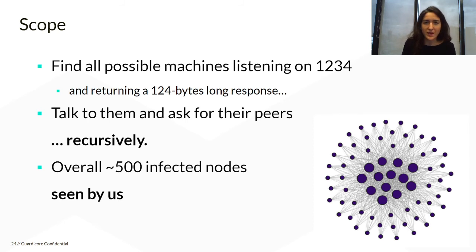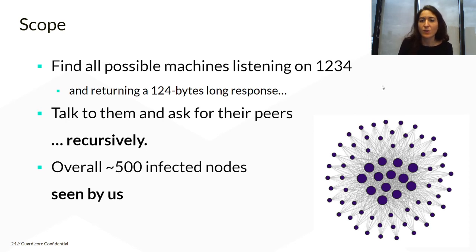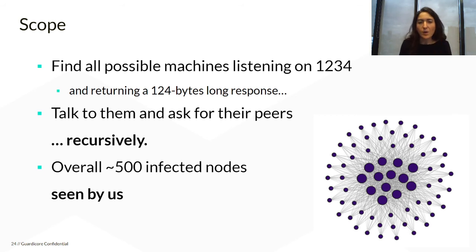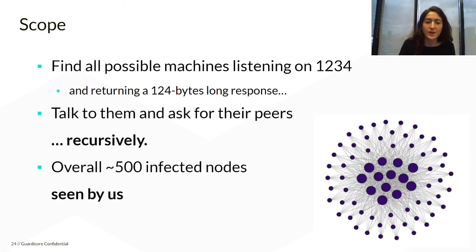We took this initial set and asked each node for its peer list, then did this recursively, ending up crawling the whole network. On one of our more successful days, we managed to produce a cluster of around 80 nodes. But overall, from the beginning of the campaign, we saw around 500 infected nodes in total. There's always a possibility there were even more nodes that we simply couldn't reach, so there may have been even more infected SSH servers we did not spot.